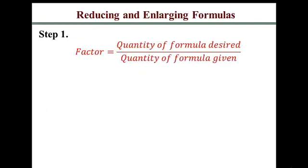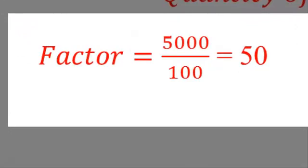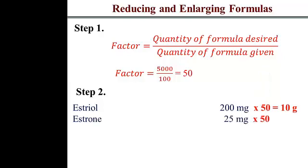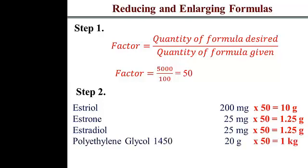Step one: determine the factor. The quantity of formula desired is 5,000 capsules; what is given is 100 capsules. So the factor is 5,000 divided by 100, which equals 50. Step two: multiply each quantity by 50. Estriol: 200 mg × 50 = 10,000 mg = 10 grams. Estrone: 25 mg × 50 = 1.25 grams. Estradiol: 25 mg × 50 = 1.25 grams. Polyethylene glycol 1450: 20 g × 50 = 1,000 grams = 1 kilogram.